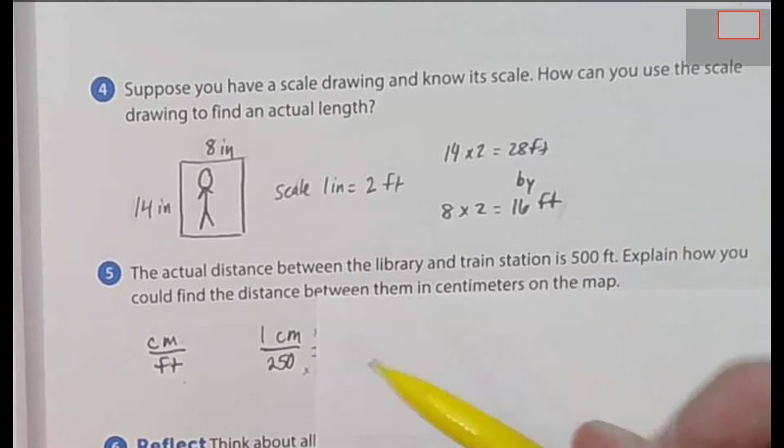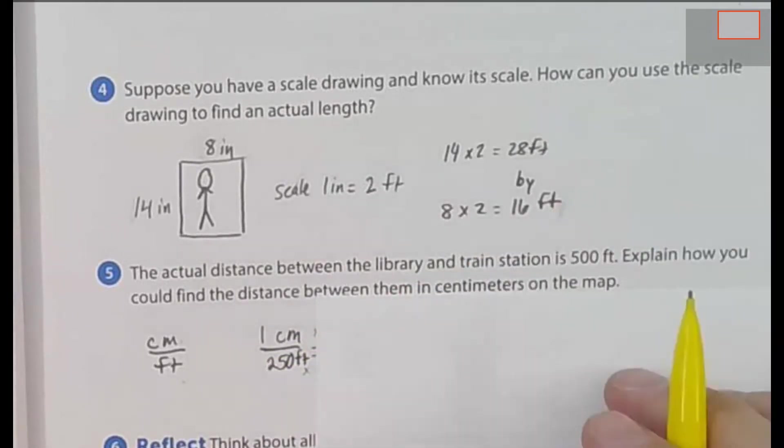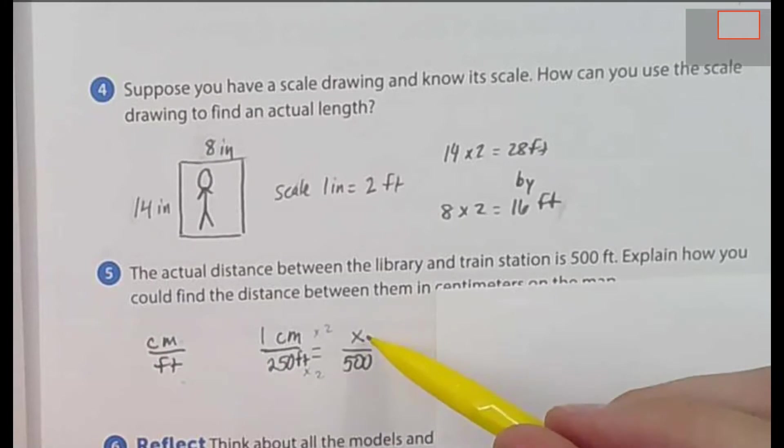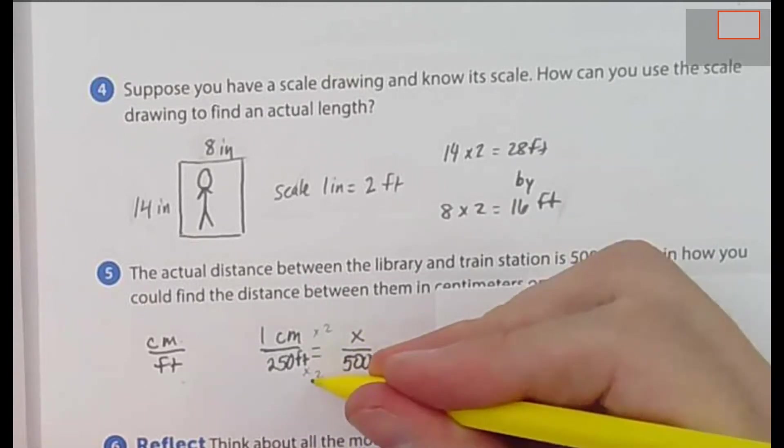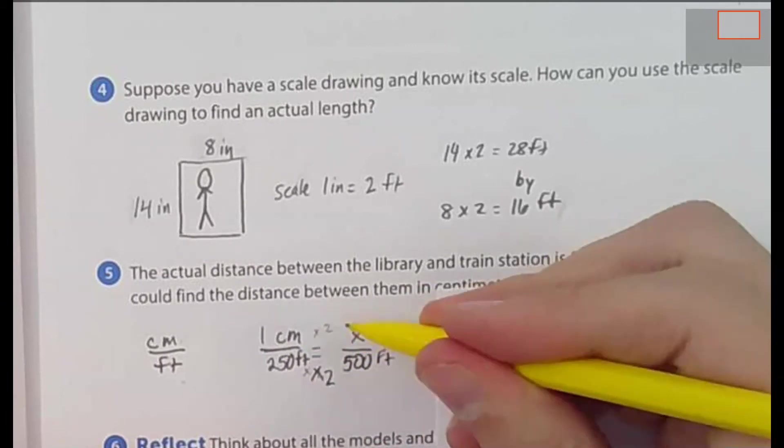And now you're going to set that equal to your new fraction. How many centimeters would be equal to 500 feet? So just ask yourself, well, how do I get from 250 to 500? Multiply that by 2. How do I get from 1 centimeter to this x that I don't know? I multiply that by 2. So 500 feet would actually be equal to 2 centimeters.